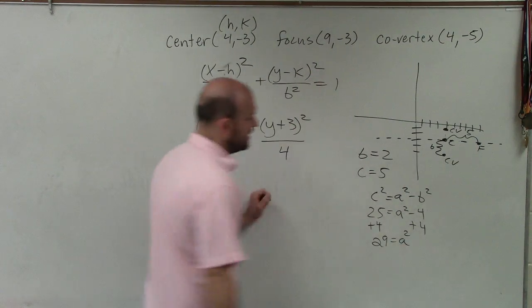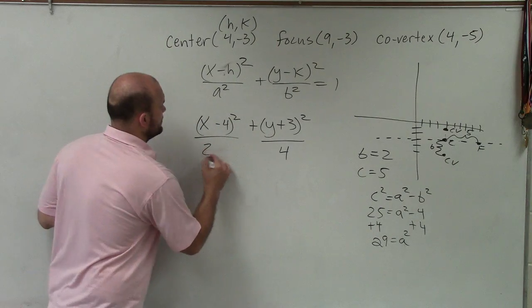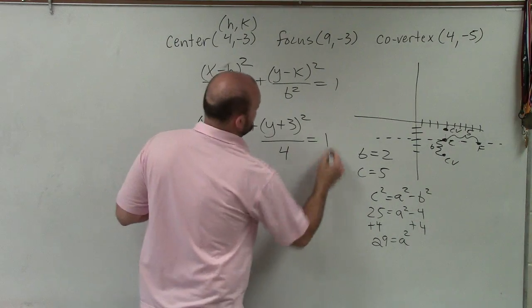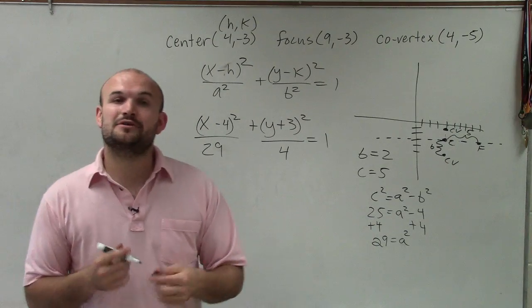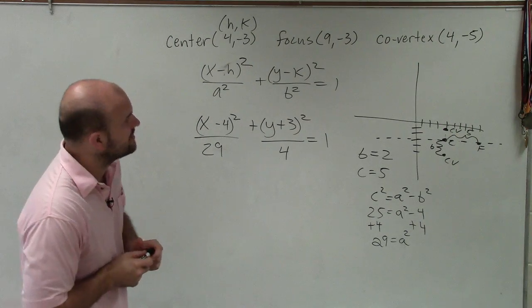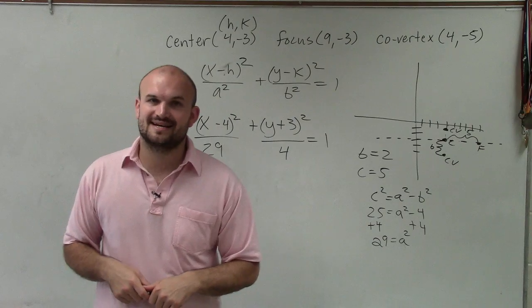OK, so now I can see that a squared equals 29. And this equation, of course, equals 1. So there you go, ladies and gentlemen. That is how you write the equation of an ellipse when given the center, the focus, and a co-vertex. Thanks.